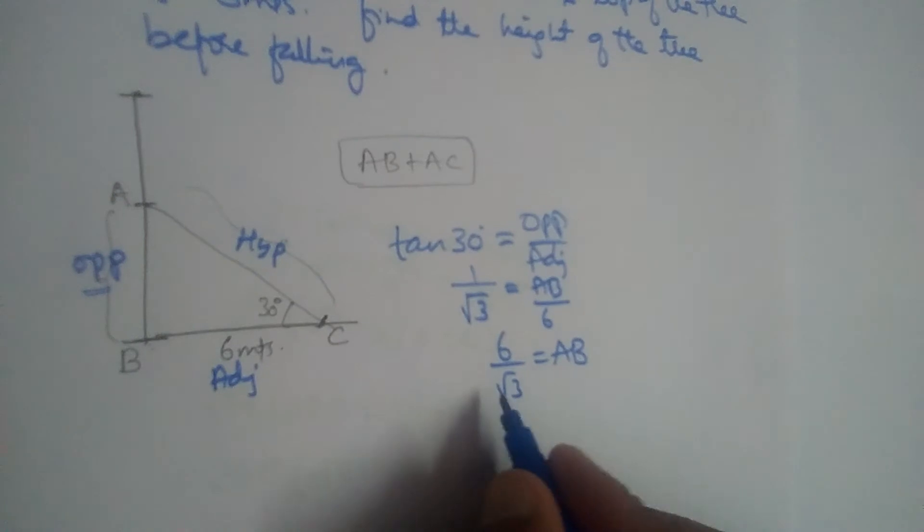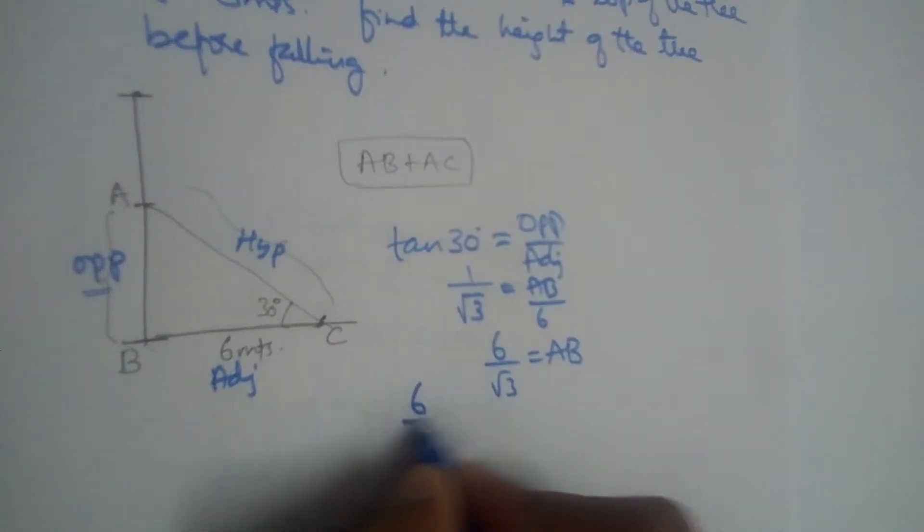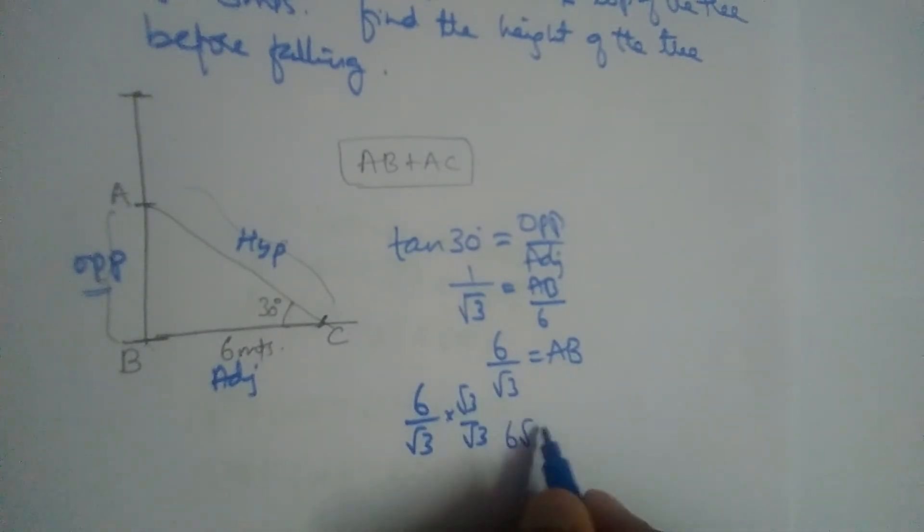So if roots are in the denominator, we'll generally rationalize that. So let us rationalize this. So this is 6 root 3 divided by root 3 into root 3 is 3. So it will get canceled. It is 2 root 3.